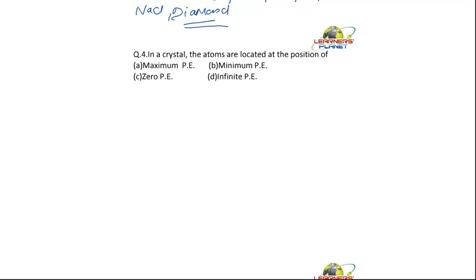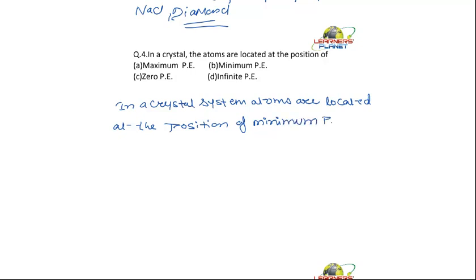So in a crystal, what happens in a crystal system? Atoms are located at the position of minimum potential energy.